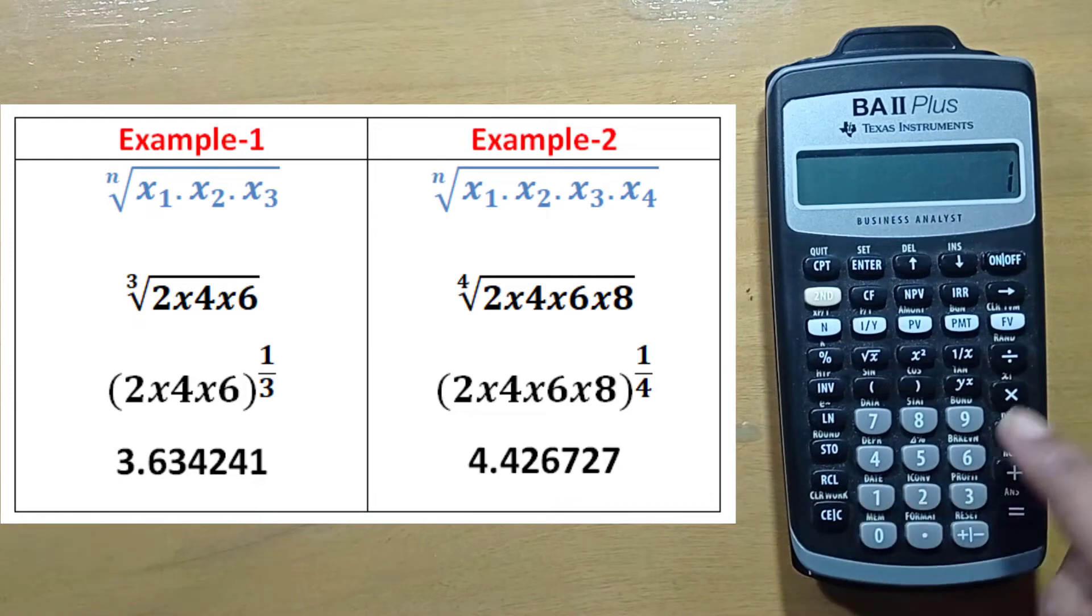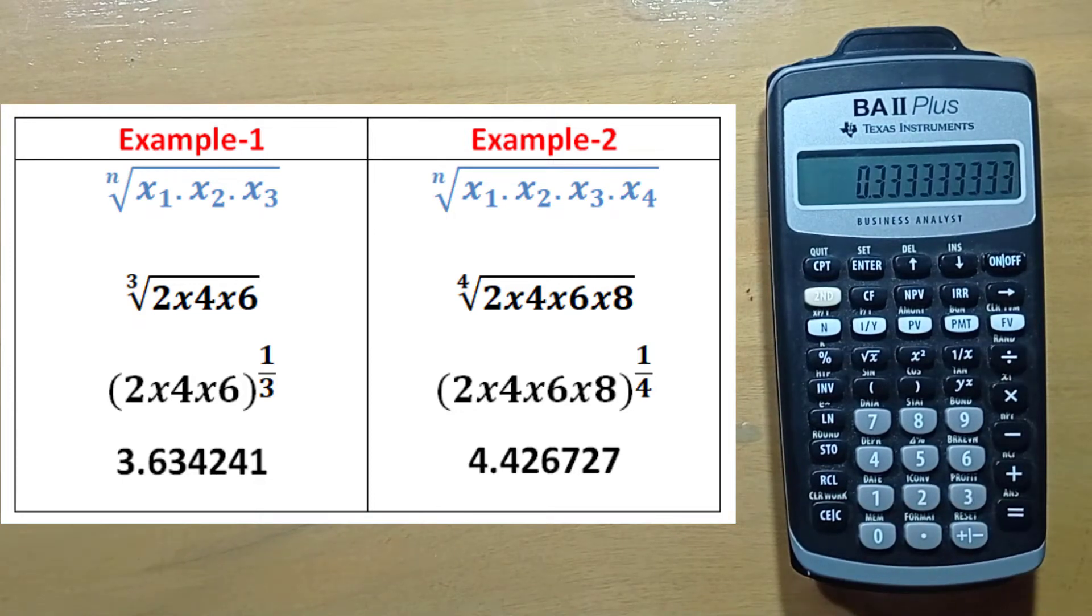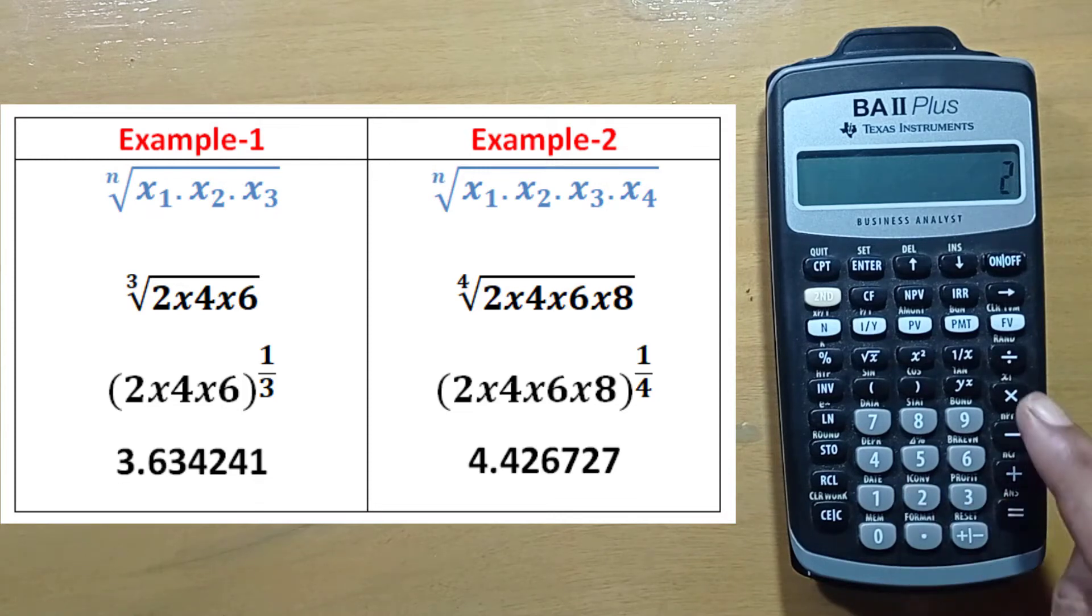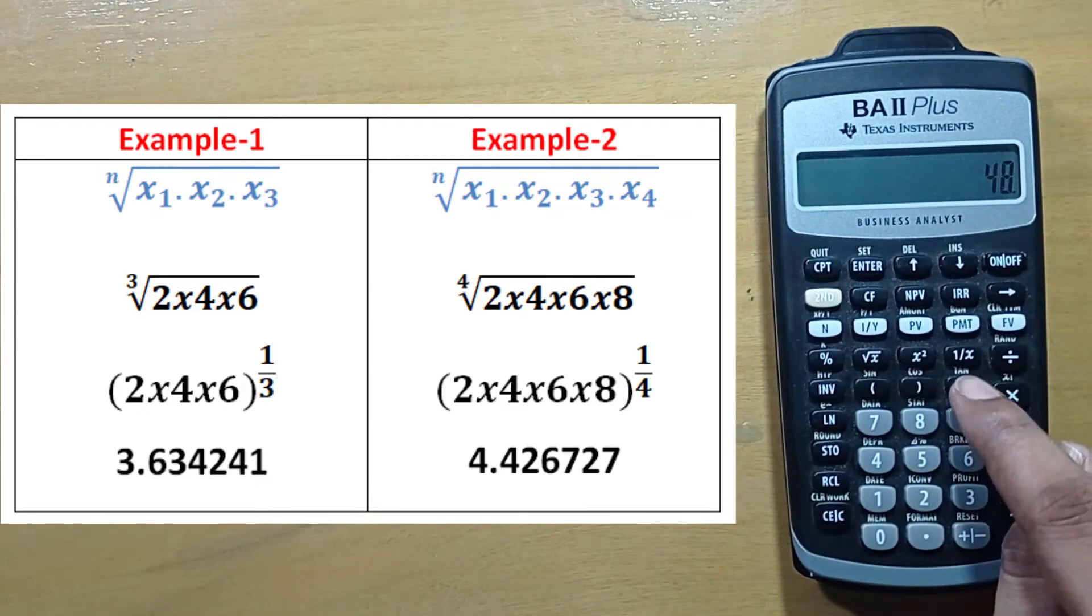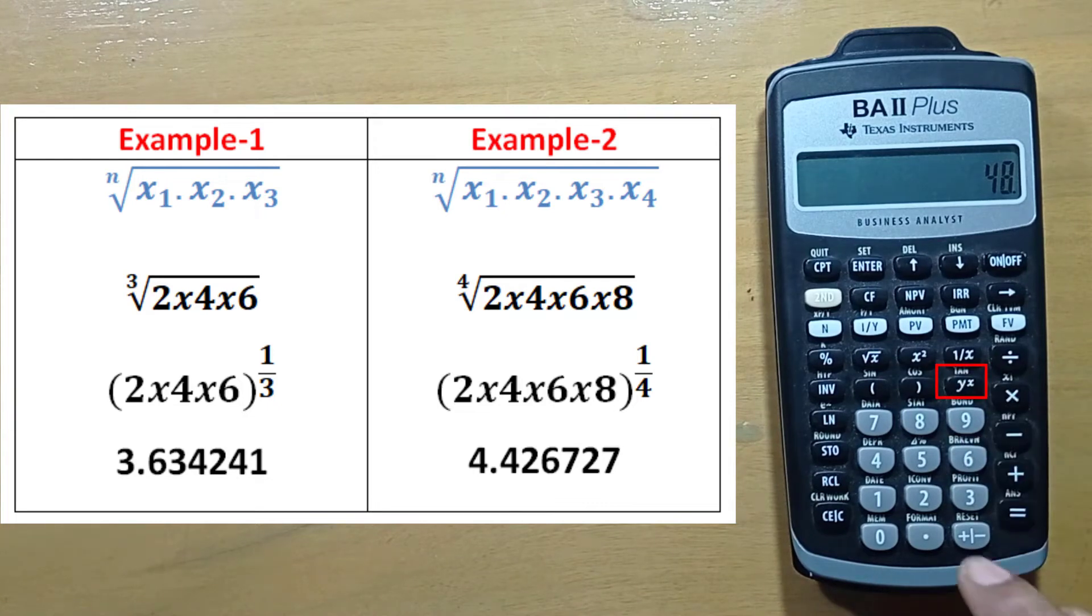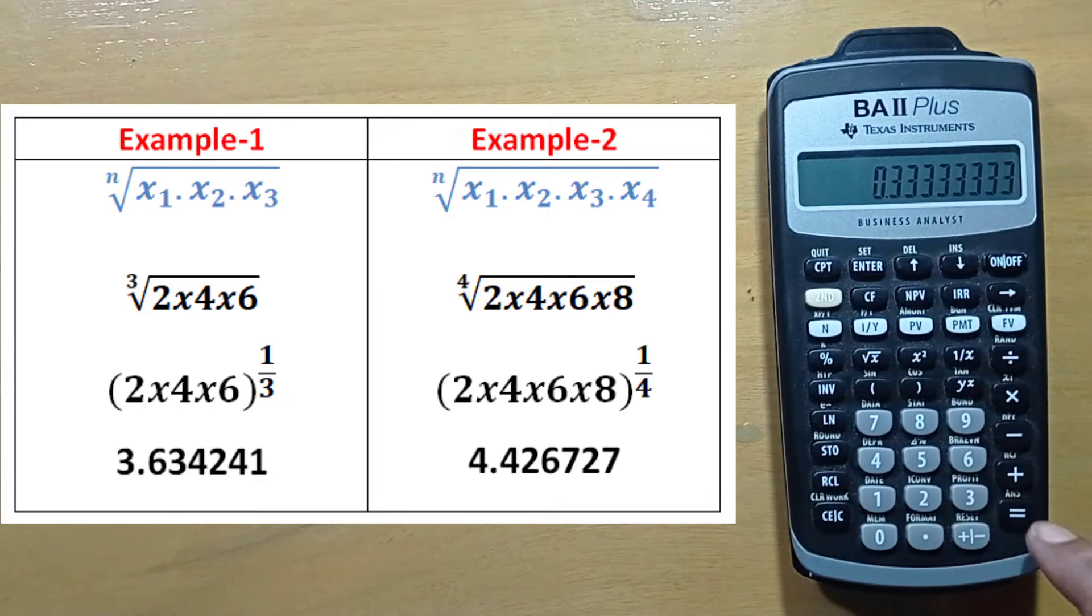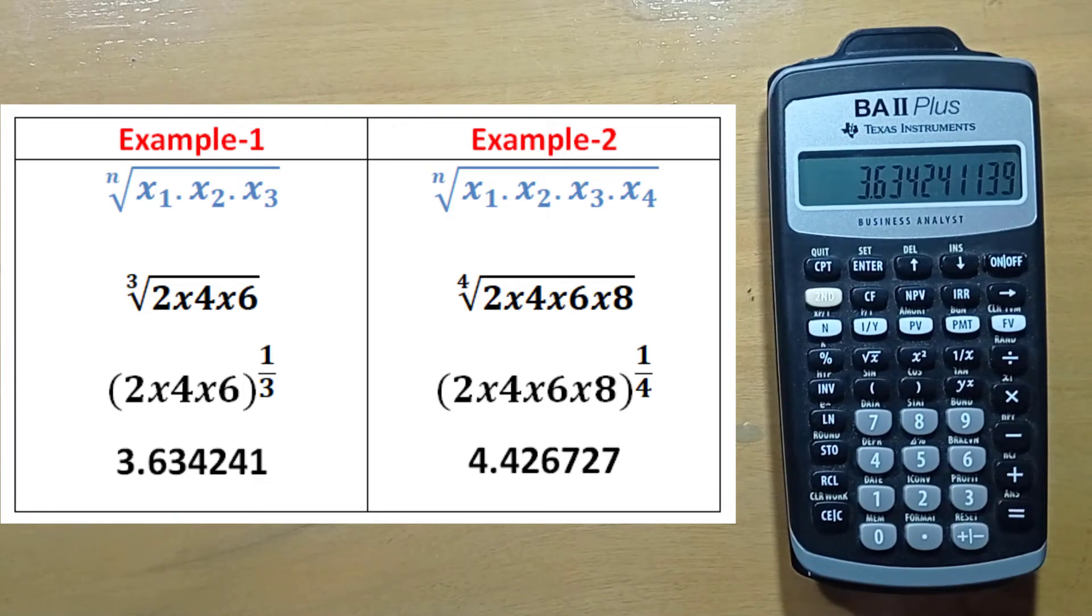First calculate 1 divided by 3 which is 0.33, then use it to calculate the geometric mean like 2 into 4 into 6 which is equal to 48. So put this 0.333 as a power, so press y to the power x, then point 3 3 3 3 3 3. So we have the same result.